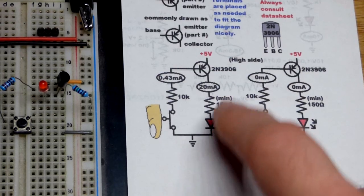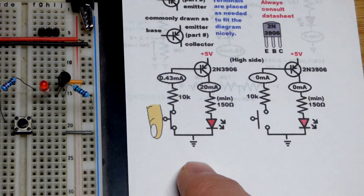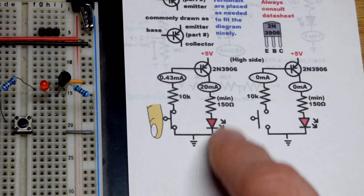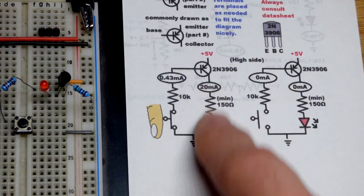That means this transistor is probably going to let through about 43 milliamps of current, but the load is limiting it. I'm only using a 150-ohm resistor to protect the LED, so we're getting about 20 milliamps of current.